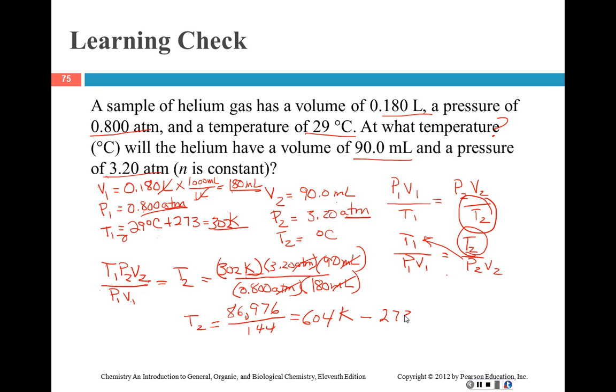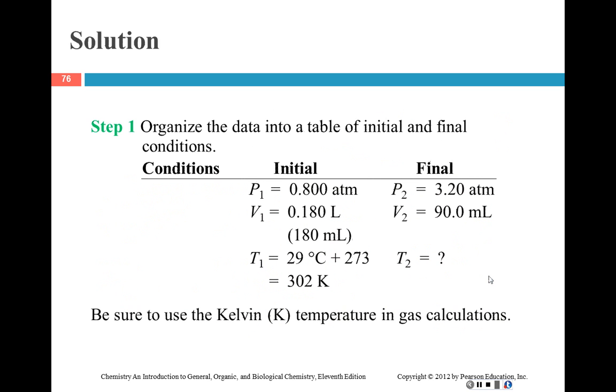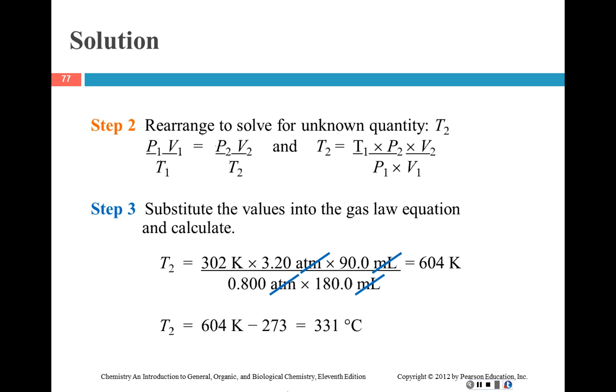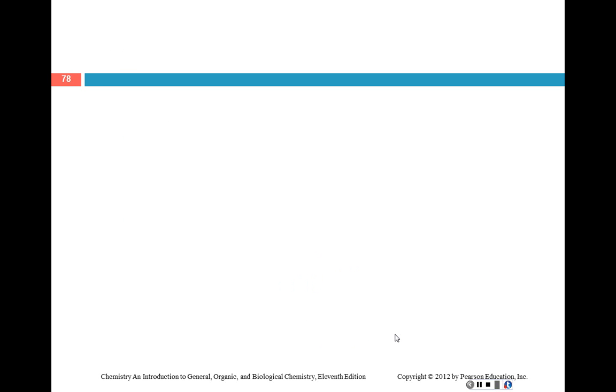Minus 273, don't forget that step, and I'm getting 331 degrees, 3.3 C. That looks like a crazy number, doesn't it? Let's see - yep, we're right. 331 C is what the book got. It's always a beautiful thing when you get the same as the book.